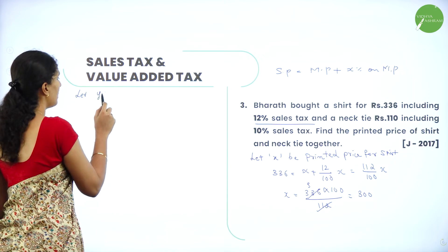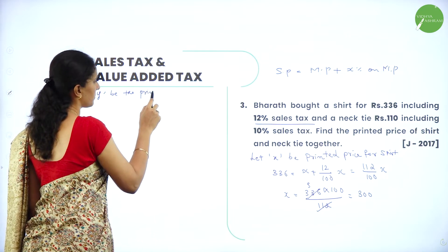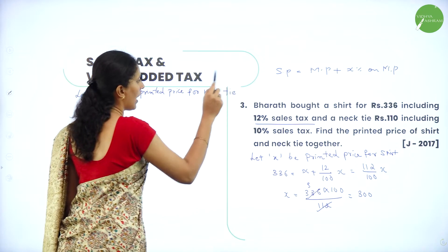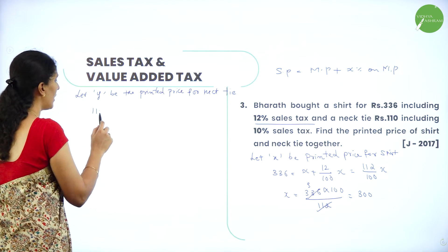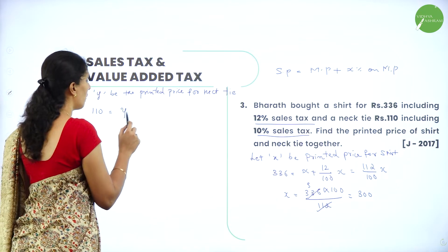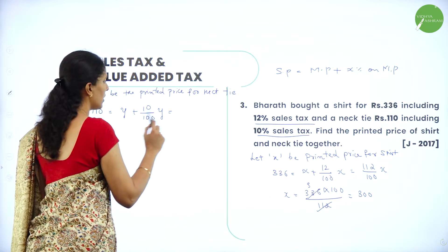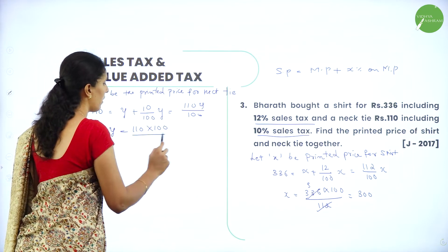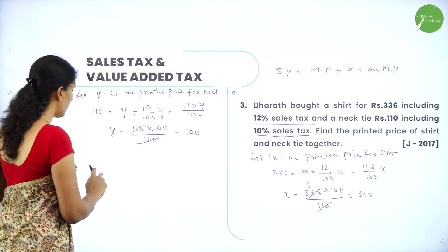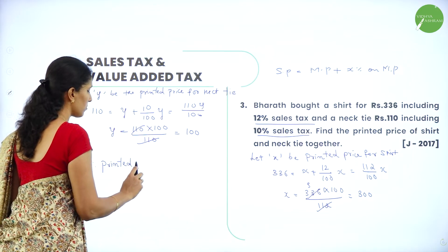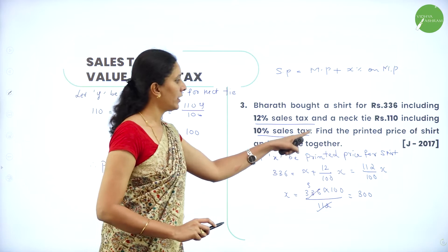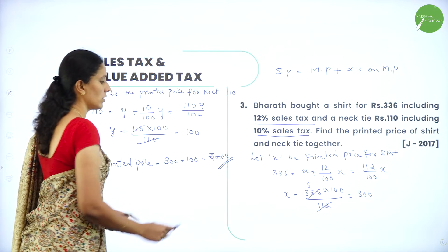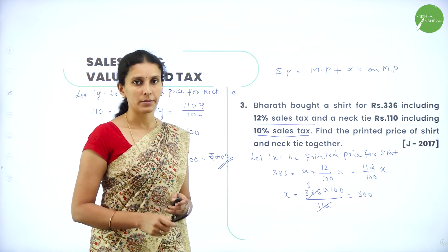Now let y be the printed price of the necktie. He bought it at rupees 110 with 10 percent sales tax. So 110 equals y plus 10 percent of y, which gives 110y divided by 100. Therefore y equals 110 into 100 divided by 110, which equals rupees 100. The total printed price of shirt and necktie together is 300 plus 100, which equals rupees 400.